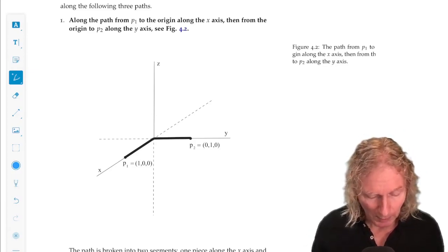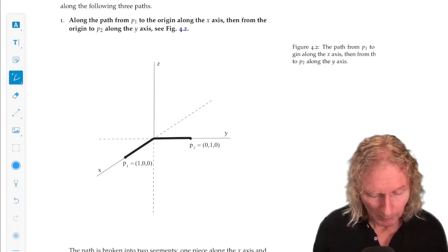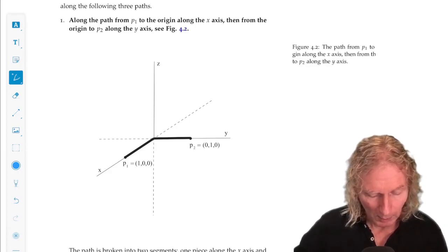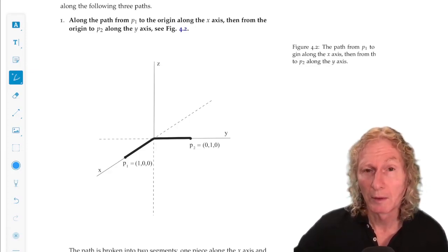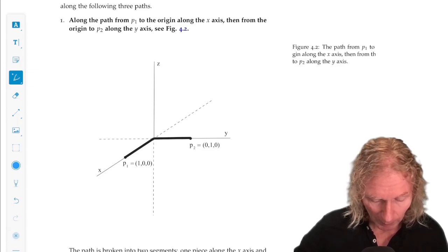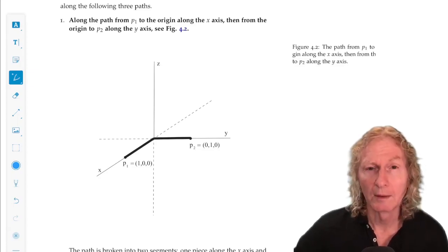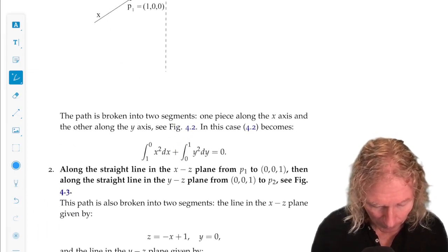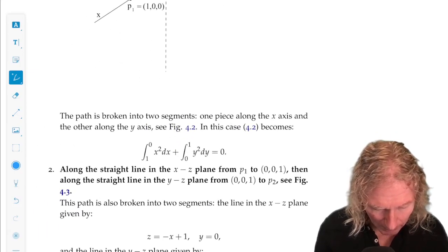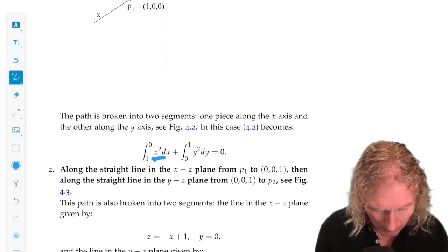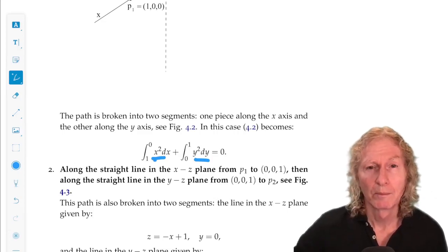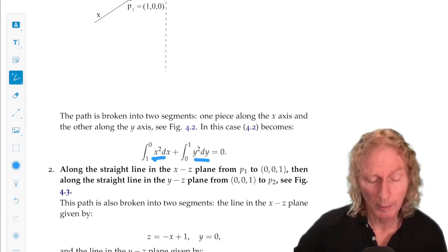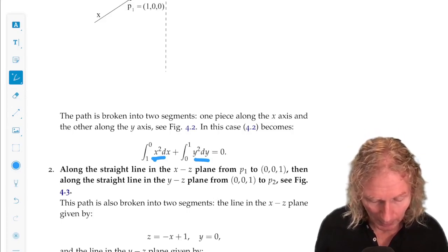So in this case, the first path segment, dy and dz is 0, and in the second path segment, dx and dz is 0. So this is pretty easy. We just plug in the variations in the vector field evaluated on the path, and we get 0 in that case.